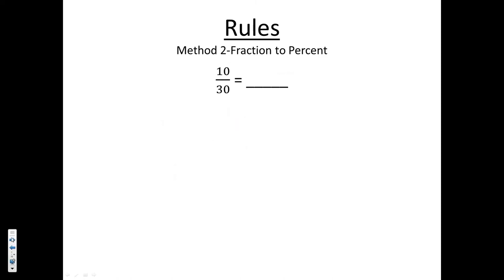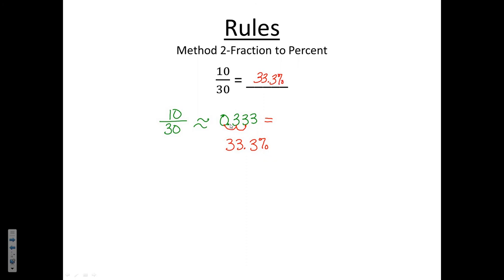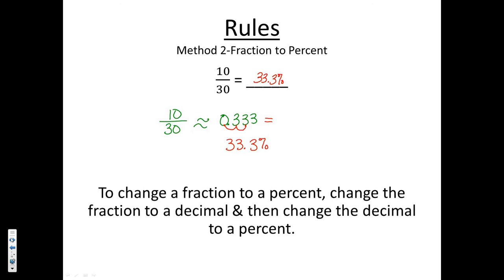Method two is a bit easier and is the preferred method. Start by changing 10/30 to a decimal: 10 ÷ 30 ≈ 0.333. Now change that decimal to a percent by moving the decimal two places to the right, giving 33.3%. We get exactly the same answer as method one. So to change a fraction to a percent: convert to a decimal first, then move the decimal two places to the right.